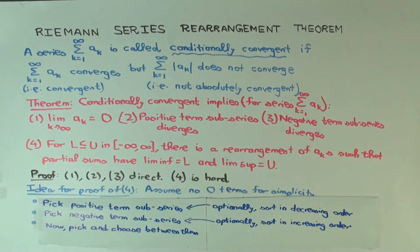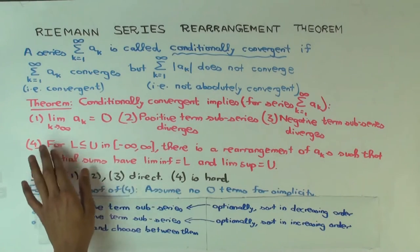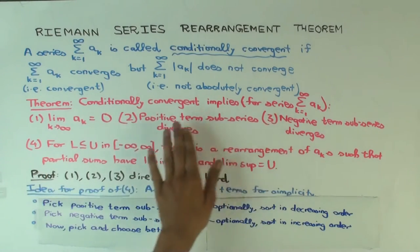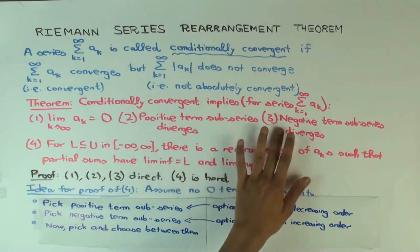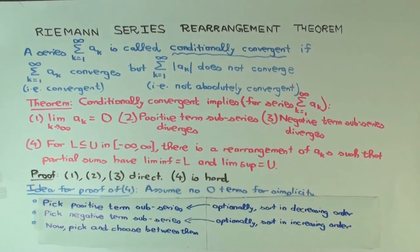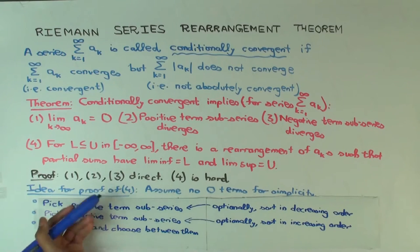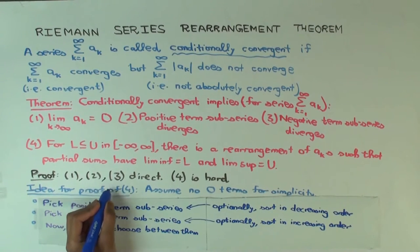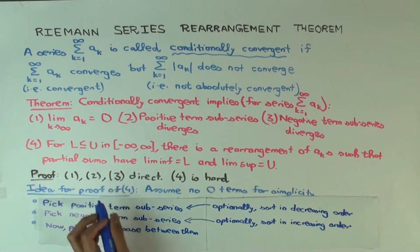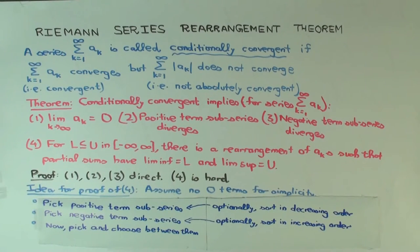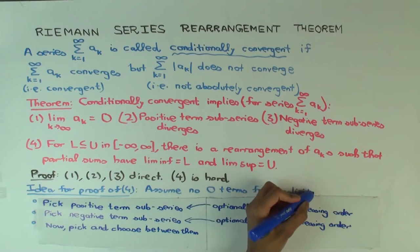We're going to prove property four based on properties one, two, and three. I'm going to give a sketch of the proof — the full details are a little too much. I'll assume that the series doesn't have any zero terms, but the series could have repeated terms, so we have to be careful about that.